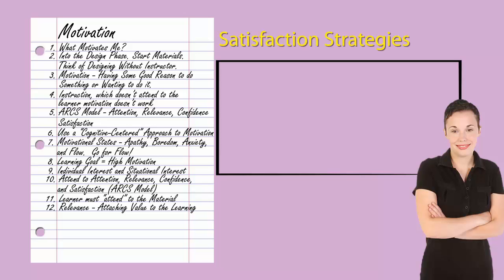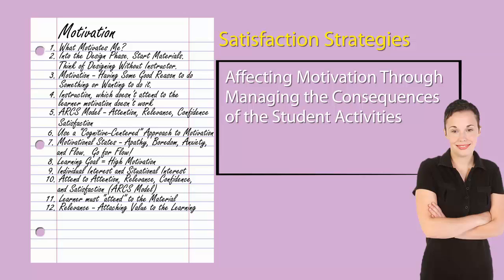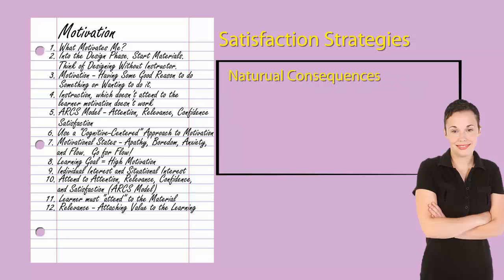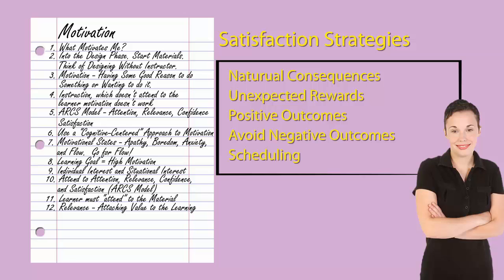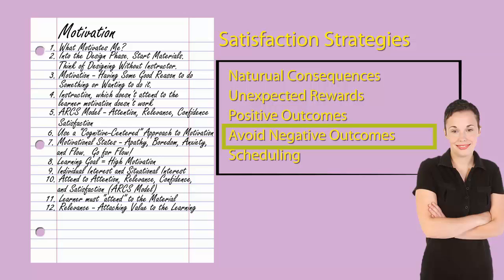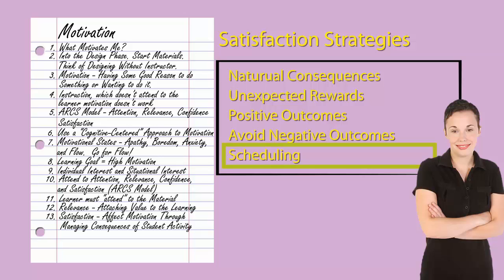Satisfaction strategies, according to Keller, look at affecting motivation through managing the consequences of student activities. These strategies include natural consequences, unexpected rewards, positive outcomes, avoidance of negative influences, and scheduling. An example of natural consequences may be a strategy which allows the learner to use skills as soon as possible after the instruction. Unexpected reward strategies may be something such as inserting non-contingent or unexpected material into the instruction. Positive outcomes may be something like providing the learner with verbal praise immediately after a learning task. Avoidance of negative influence strategies may be as simple as ensuring that students are not subject to threats or surveillance methods. And scheduling strategies may involve scheduled reinforcement when learning new tasks.